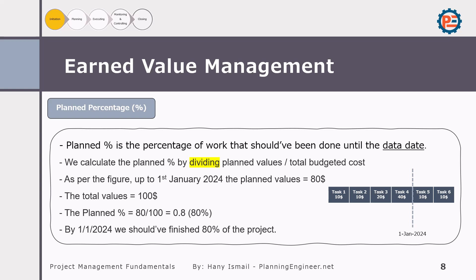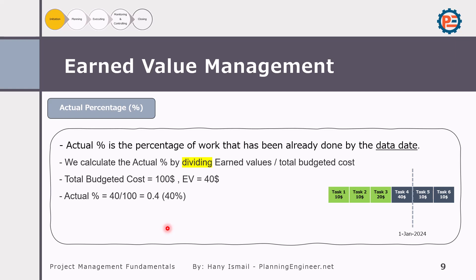Now we'll talk about planned percentage. The planned percentage shows the percentage of work that should have been completed by a specific date. At the data date, the planned value is 80 and the total budget of the project is 100, so the planned percentage is 80%. You simply divide the planned value by the total cost of the project. The actual percentage represents the earned value divided by the total project cost. Since the earned value was 40 and the total cost is 100, the actual percentage is 40 divided by 100, which equals 40%.